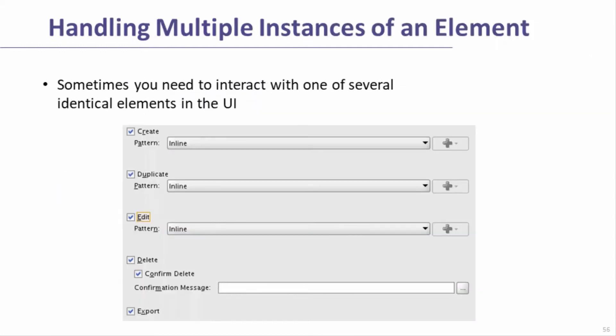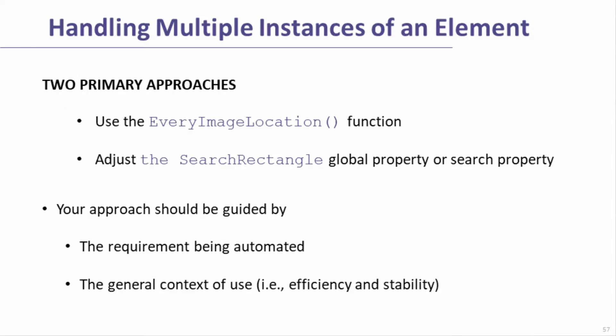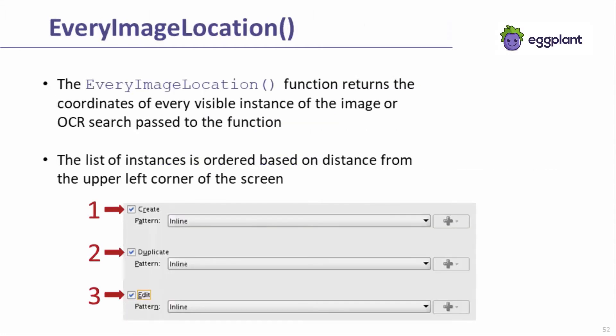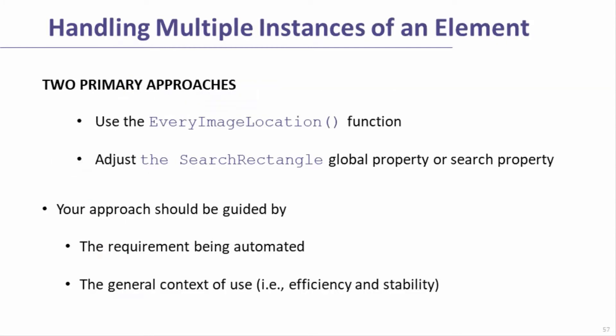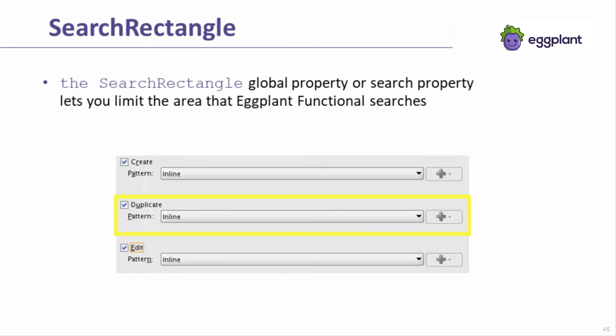A common challenge that comes up when automating GUIs is handling multiple elements on the screen, such as duplicated drop-down menus or checkboxes. EveryImageLocation and search rectangles provide two powerful methods for handling this scenario, and the methods can be combined. EveryImageLocation is quick and easy to use, but depends on the position of the desired instance of the element relative to the other instances being predictable. It's also important that all instances of the element are already loaded on the screen prior to using EveryImageLocation. Search rectangles are not dependent on the relative position of duplicate elements, but require some additional setup. Using unique elements on the screen, such as the EditLabel, you can set up a search rectangle that prevents Eggplant from seeing undesirable instances of an element.